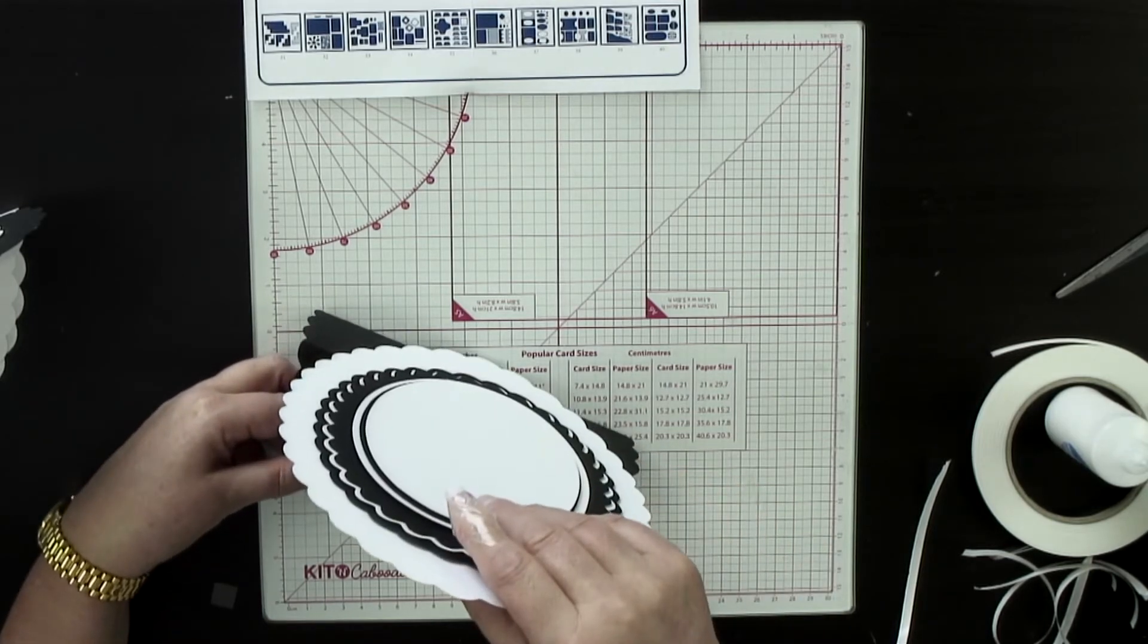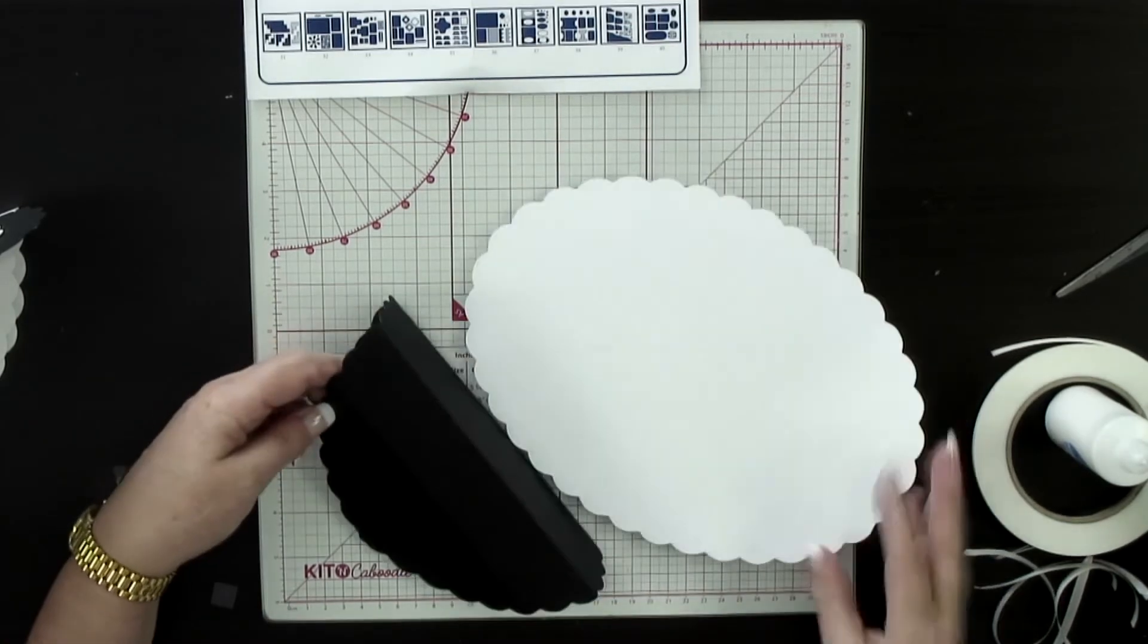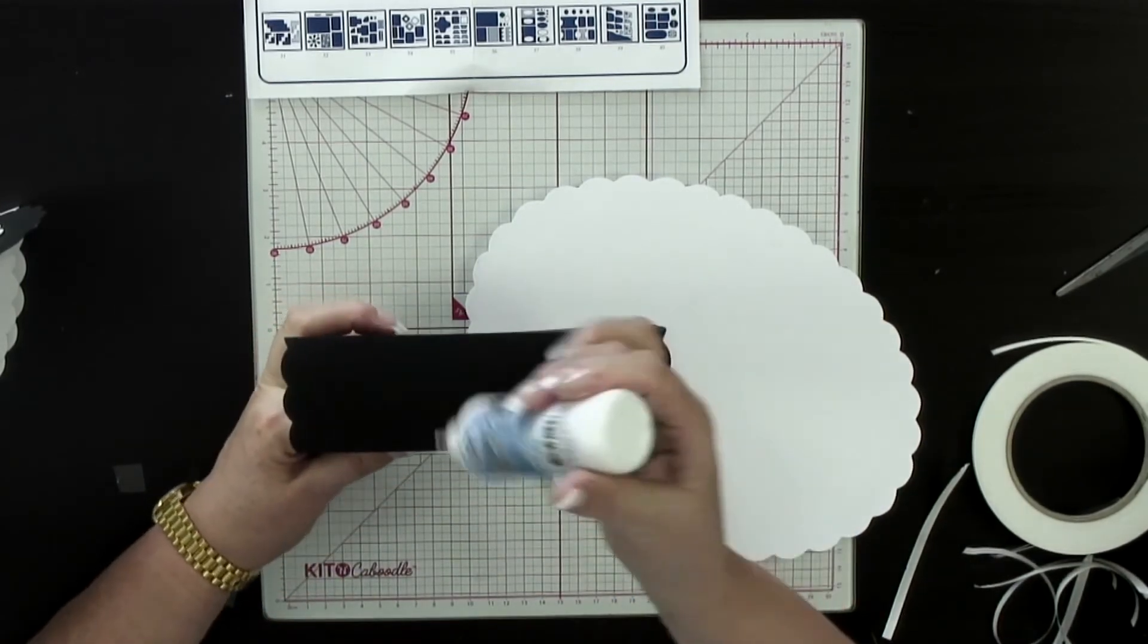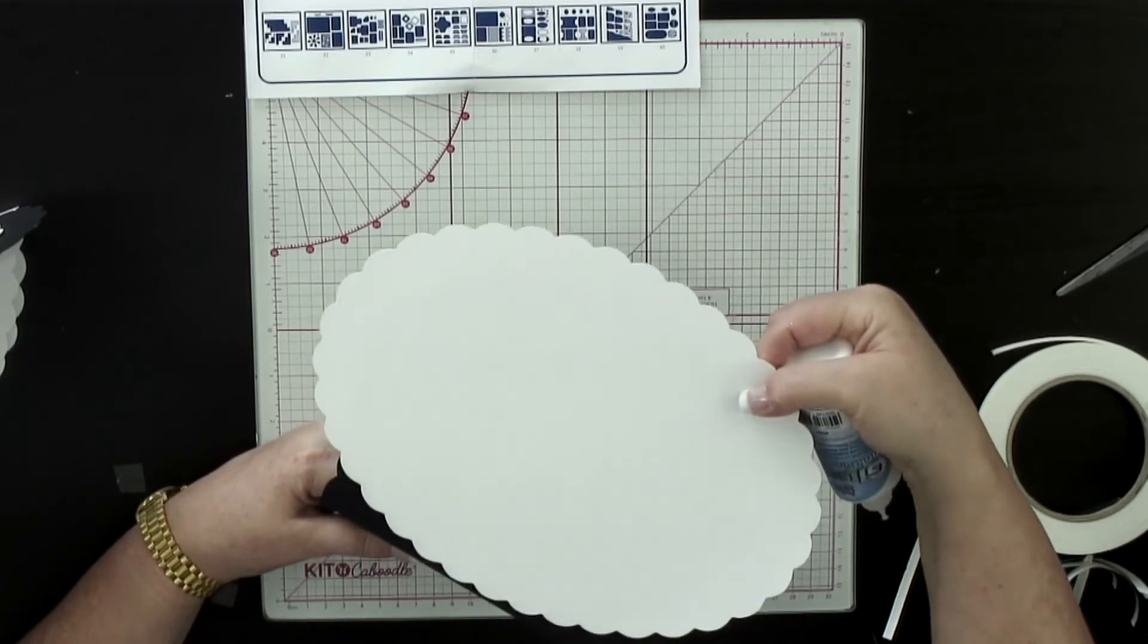But for the purpose of this I'm going to put the glue on here. Now I've got a scallop shape.